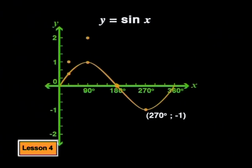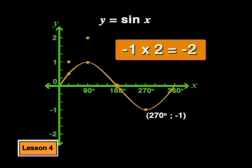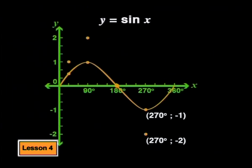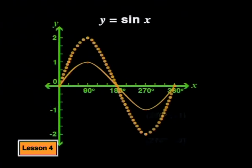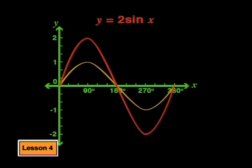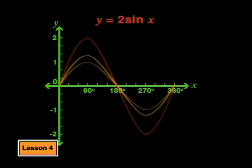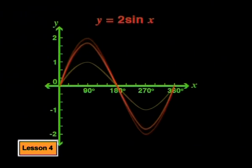Looking at a negative y value: at 270 degrees, y is negative 1, which was the minimum value of the parent graph. Multiplying by 2 gives negative 2, so we plot the point (270, -2). Here, multiplying by 2 has caused a decrease, but the new point is still twice as far from the x-axis. If we continue to take each point on the parent graph and multiply it by 2, we create the graph of y equals 2·sine(x). It's as if the parent graph has been stretched vertically, giving a vertical stretch factor of 2.